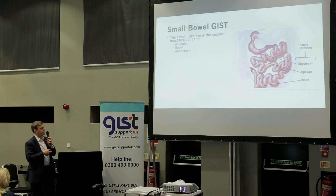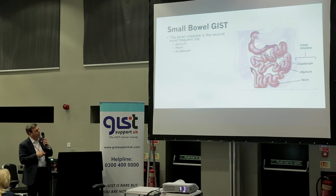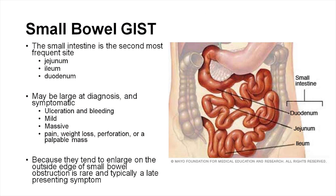The small bowel is all of the bowel after the stomach, including the duodenum, but from the duodenum onwards it's very floppy. The most common site is actually around the jejunum — the mid-bowel — and that's quite easy to deal with. It presents often with ulceration or bleeding, and sometimes very big tumours can cause pain, weight loss, or perforation. They generally are on the outside of the bowel so they don't tend to obstruct all that much, but obstruction can be a rare presenting symptom.